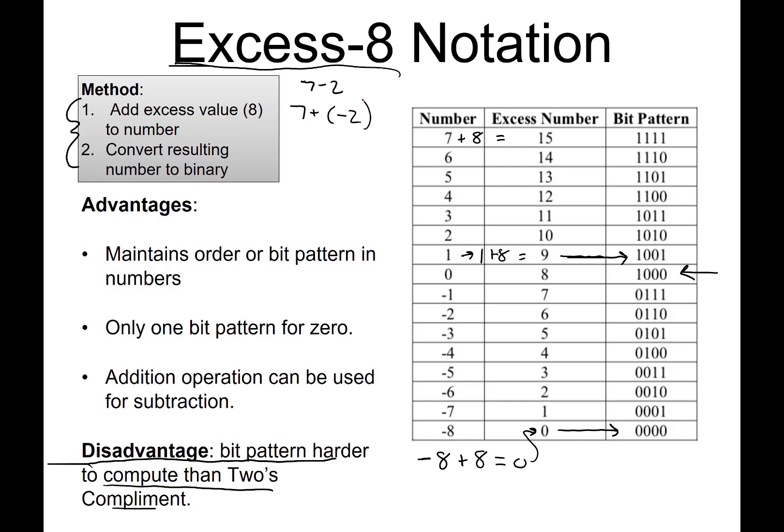What we want to do is get our number here. So 7 in excess-8 notation: 7 plus 8 equals 15. Then we use the binary number for 15, which is 1111.